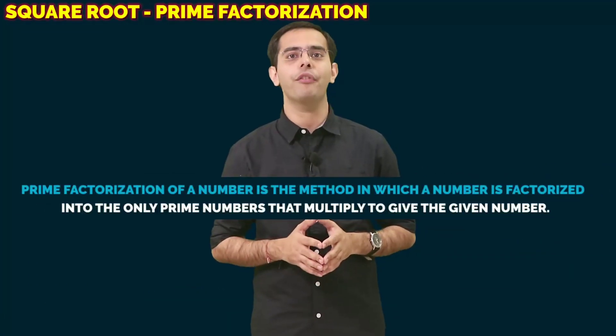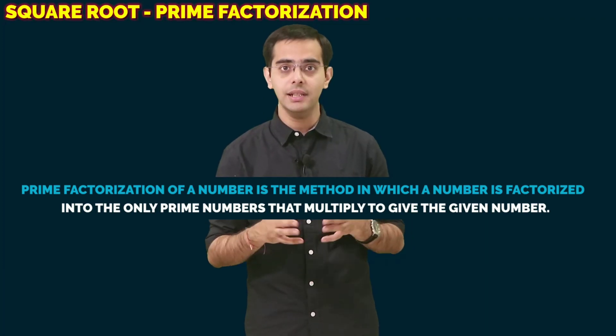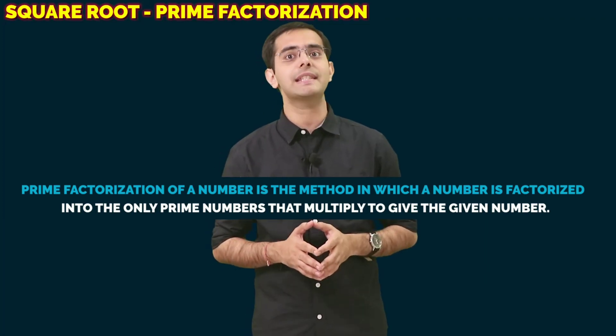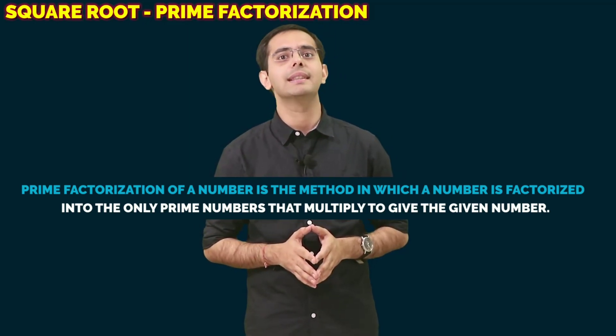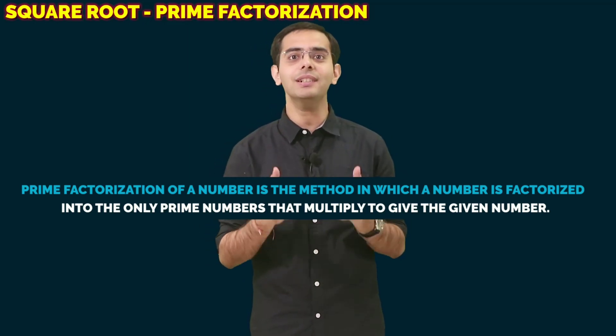Correct. Prime factorization of a number is the method in which a number is factorized into only the prime numbers that multiply to give the given number.